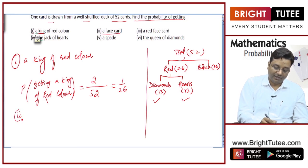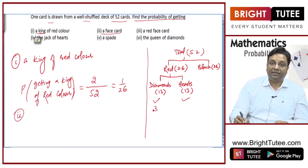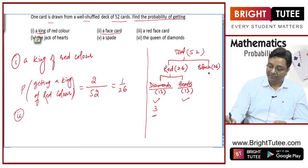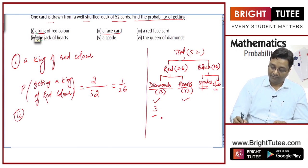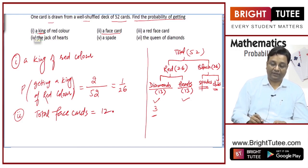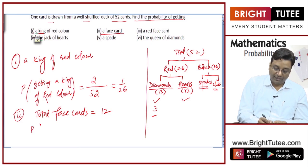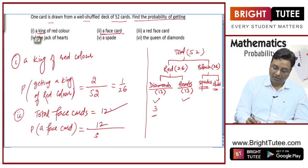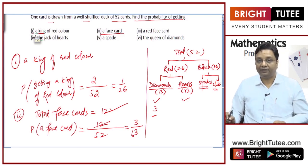Find the probability of getting a face card. There are 3 face cards in each of the 4 suits — diamonds, hearts, spades, and clubs — giving a total of 12 face cards. So the probability of getting a face card is 12/52, which simplifies to 3/13.